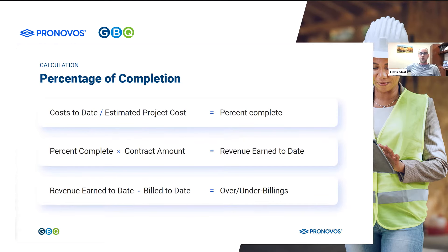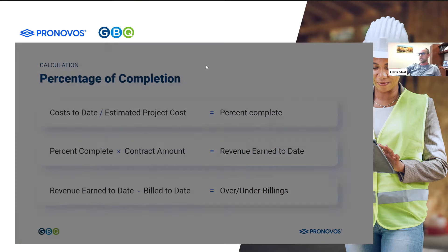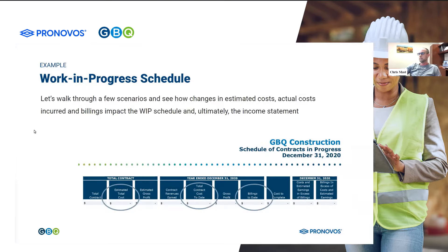You take your cost incurred so far to date. A lot of times I use the example of a rocking chair just to be easy. So let's say I put $5 of time and materials into building a rocking chair. I take that and I divide it by my total estimated project cost, which in this case I think it's going to take me...